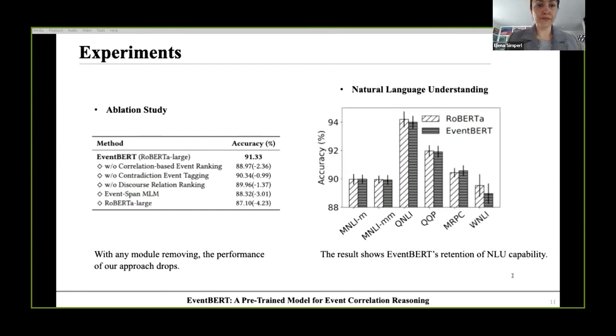We conduct an extensive ablation study on story-closed test in the left table to investigate the effect of each component of our EventBERT. We first remove each of the three objectives during the pre-training. It is shown that the correlation-based event ranking objective plays a critical role, and the accuracy drops by 2.36% without it. Besides, ablating contradiction event tagging and discourse relation ranking also lead to 0.99% and 1.37% decrease. We also replace the proposed three objectives with existing span-based masked language model for pre-training, which is denoted as event span MLM. Compared to our proposed event correlation-based objectives, traditional span-based masked language model cannot fully leverage the event-based corpus, and EventBERT outperforms it by 3%. To verify EventBERT is still competitive in NLU after continual pre-training with our objectives, we fine-tune Roberta and EventBERT on NLU tasks and report average performance on 5 runs on the dev set in the right figure.